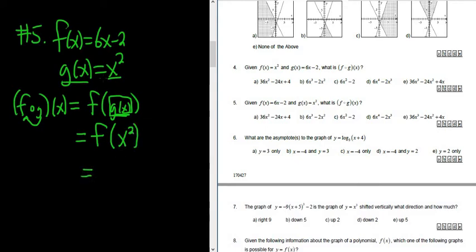Now we're supposed to look at f. So here's f up here. So f of x is 6x minus 2. Here our x is x squared. So instead of x, it's 6x squared minus 2.